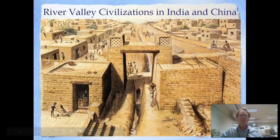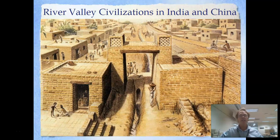Hello students of world history. Today is still unit one, but it's part four of our unit, talking today about river valley civilizations in India and China.